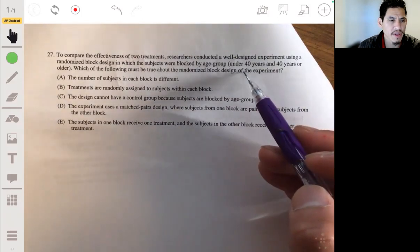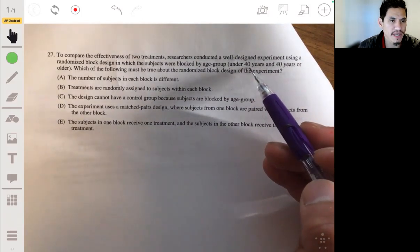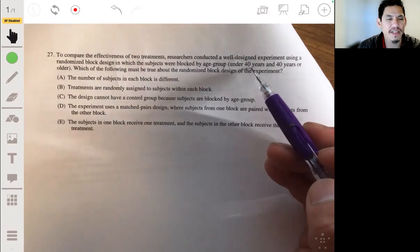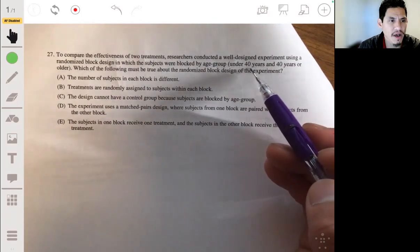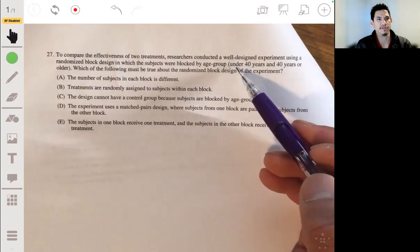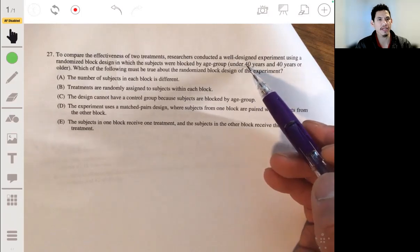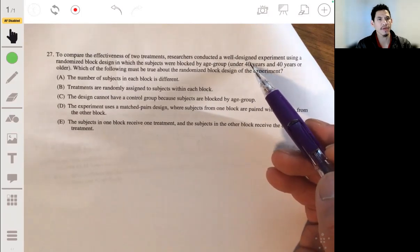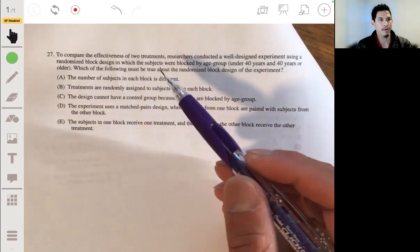Maybe, you know, like it's probably, probably age had a significant factor on the effectiveness of these treatments. So they wanted to block for age. They grouped them based on their age, under 40 and over 40. Well, let's just go through these.